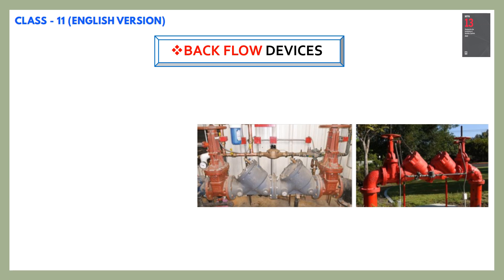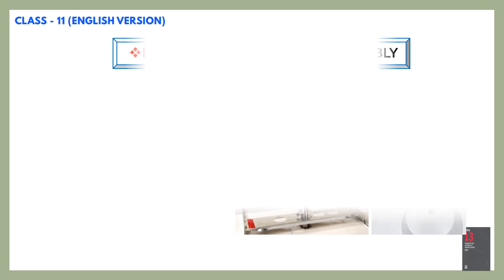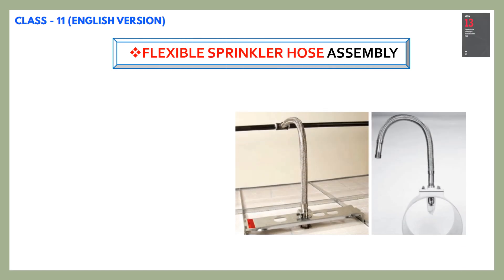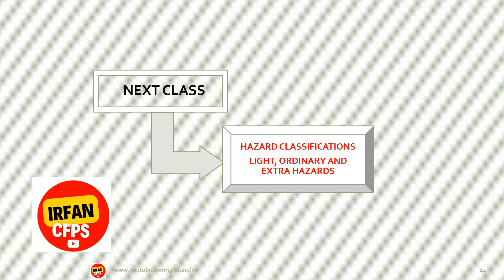Backflow prevention devices should be installed in an accessible location to provide for service and maintenance. In our last slide, we shall go through flexible sprinkler hose assemblies. Flexible hose sprinkler assemblies must be installed in accordance with the requirements of the listing, including the installation instructions provided by the manufacturer.